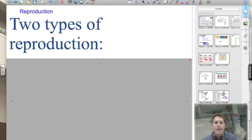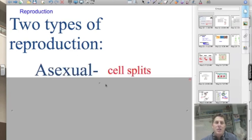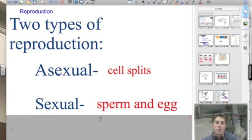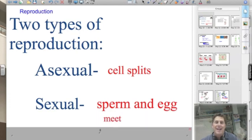As we mentioned in class yesterday, there are two types of reproduction. I'm going to give you the nuts and bolts of reproduction really quickly so we can get back to class, do the activities, and have a better understanding. Our two types of reproduction: asexual reproduction where the cell splits, and sexual reproduction where sperm and egg meet.